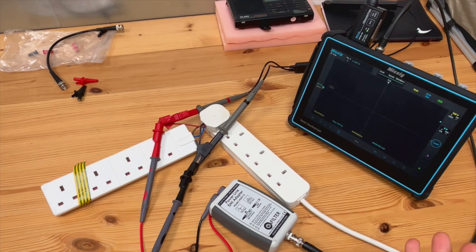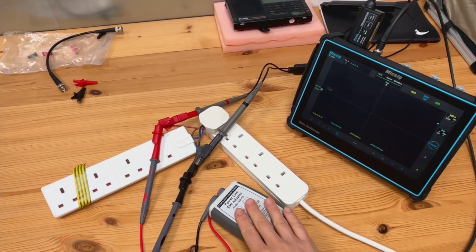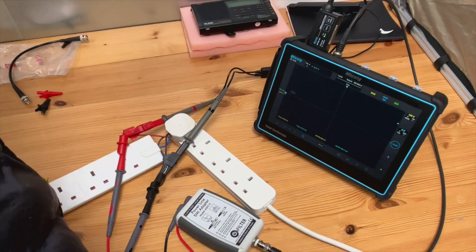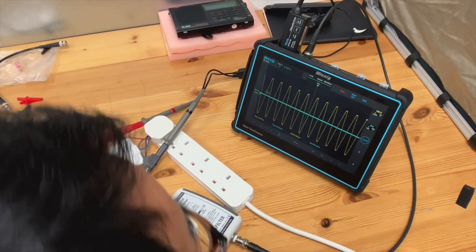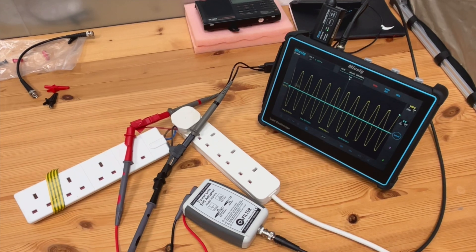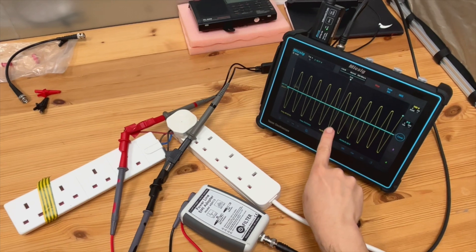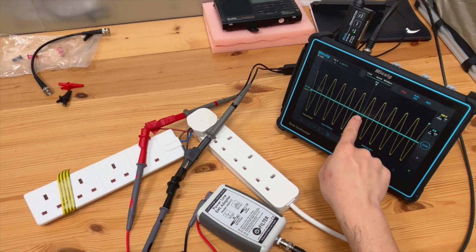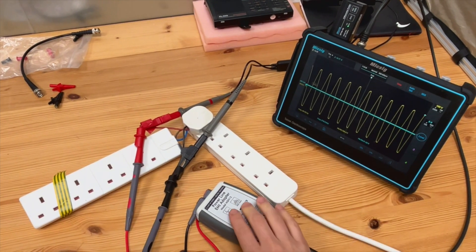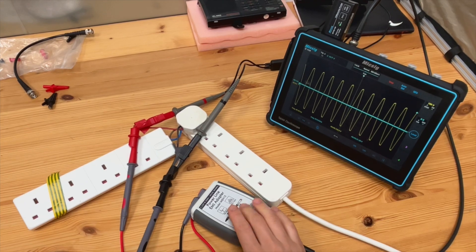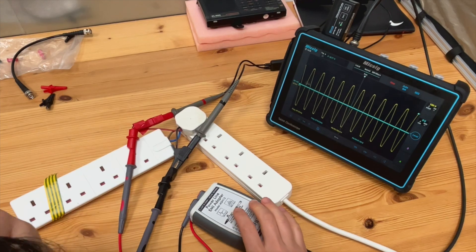You're going to see whether this transient event would be captured by this adapter. Let's do that. Yeah, I just switched on the lights in the room and there's an associated transient event there and it's captured by this module because it's on channel two and it's not captured on channel one. Clearly this one has much better performance in terms of capturing this transient event compared with your normal differential probe.